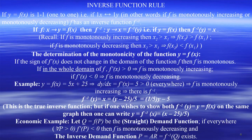Now let's look at the inverse function rule, which is an application of the chain rule. A normal function brings X to Y; an inverse function returns Y to X. If Y equals F of X, then the inverse function F to the power minus 1 of Y equals X. Note: the argument of the inverse function is Y, not X.